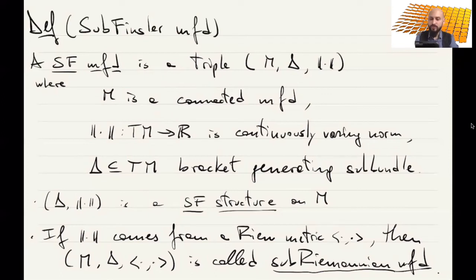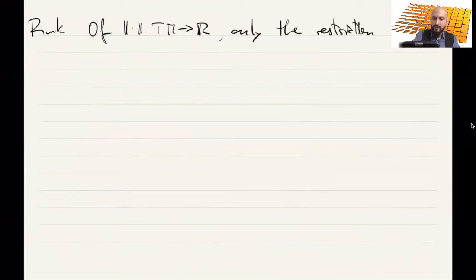Now, what we will do? We will use the norm to measure tangent vectors of curves that are tangent to delta. As you will see, it is really not important how the norm is defined outside delta. Let's make this as a remark. So of this norm, only the restriction, norm restricted to delta from delta to R, will be important, will be used.